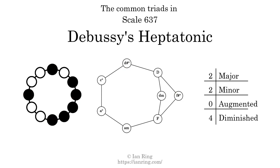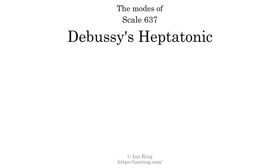There are 4 diminished triads. Here is a Hamiltonian path of parsimonious voice leading that uses all the triads. This scale has 7 modes. The first mode is itself.